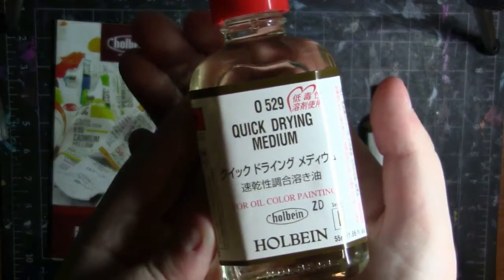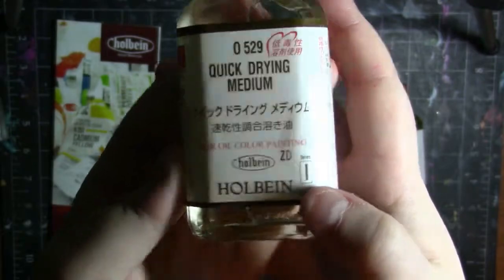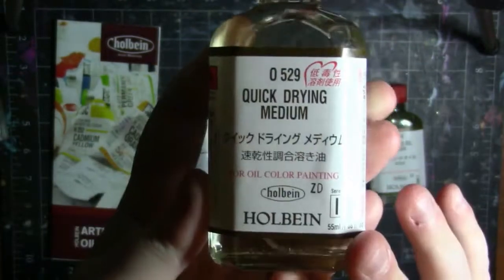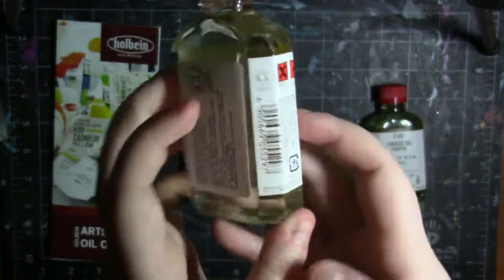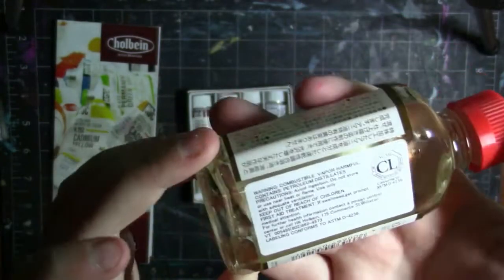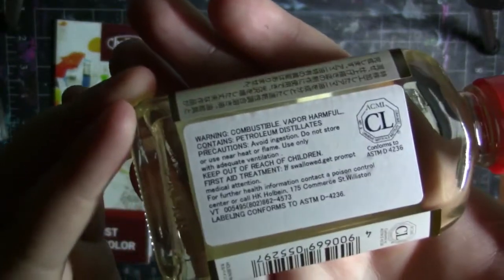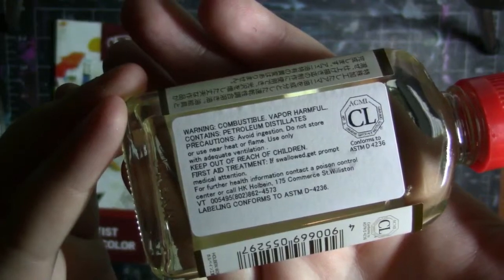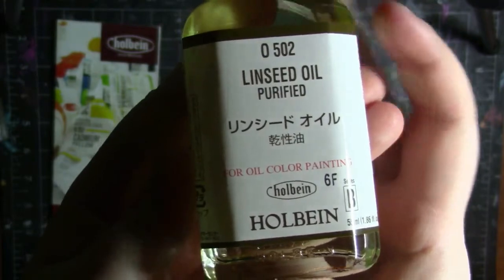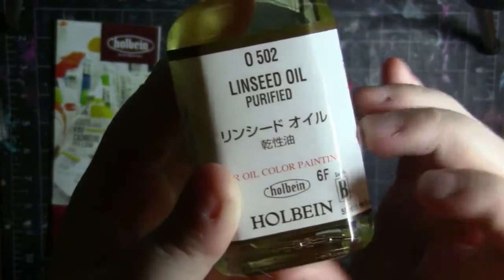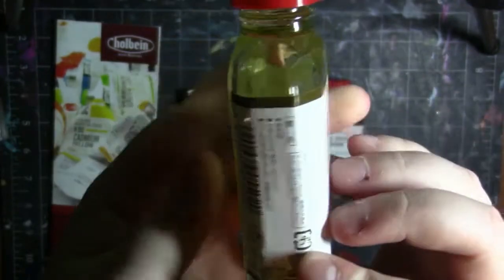Then we have the quick drying medium and it is from their series I. This is for oil painting only. Do not use this with the Holbein Duo Aqua because it will not be a good thing. Then basically everything else is in Japanese except for the warning. Then we have the linseed purified oil. It is also only for oil painting. Do not use this with the Duo Aquas. And the rest of it is in Japanese.